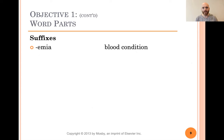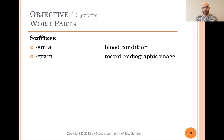Suffixes: -emia means a blood condition. Think of like anemia — we remember from a previous lesson that an- means without. So anemia literally means without blood, but it really just means you have low concentrations of iron and other things in your blood. -Gram is a record or radiographic image. So like in another lesson we had -meter or -scope, which were used to record and look at things. -Gram will be like a record or radiographic image — they call an x-ray a radiograph or a radiogram.